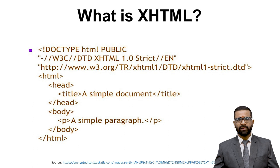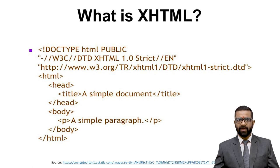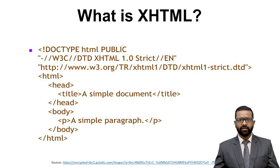Here we have an example: the DOCTYPE declaration — HTML public, with an address and encoding scheme at http://www.w3.org, then TR XHTML, DOCTYPE definitions, and XHTML strict.dtd. Then we have the HTML tag, head, title 'a simple document', the title is closed, then body, a paragraph 'a simple paragraph' which must also be closed, then body and HTML tag are closed.